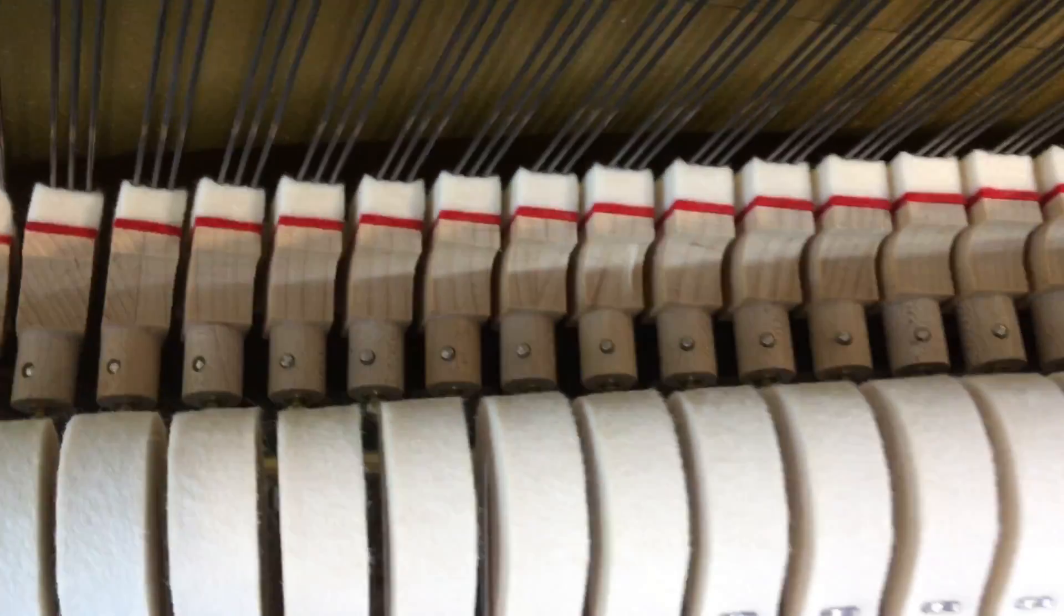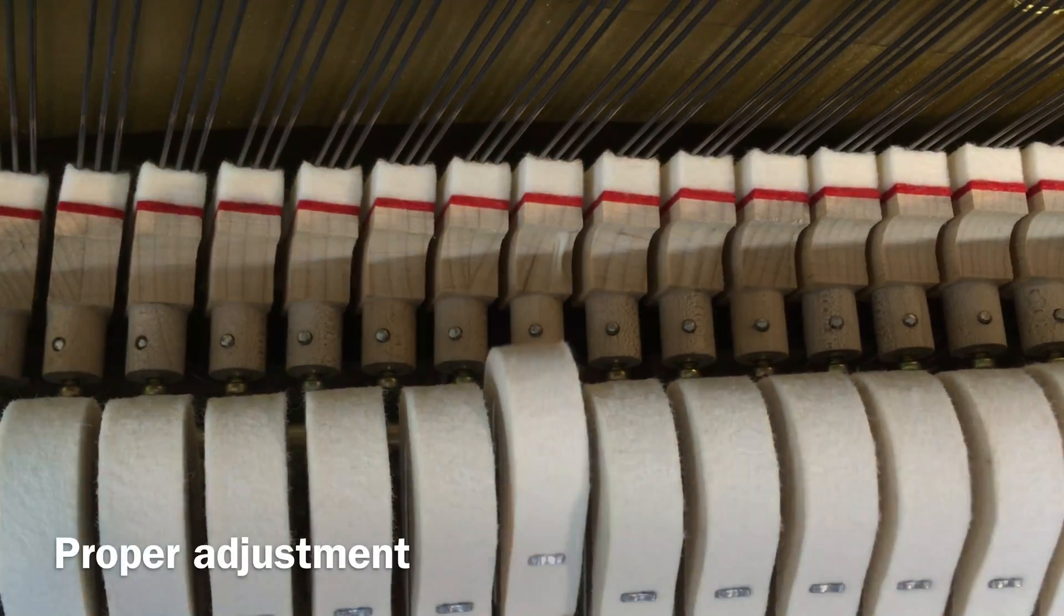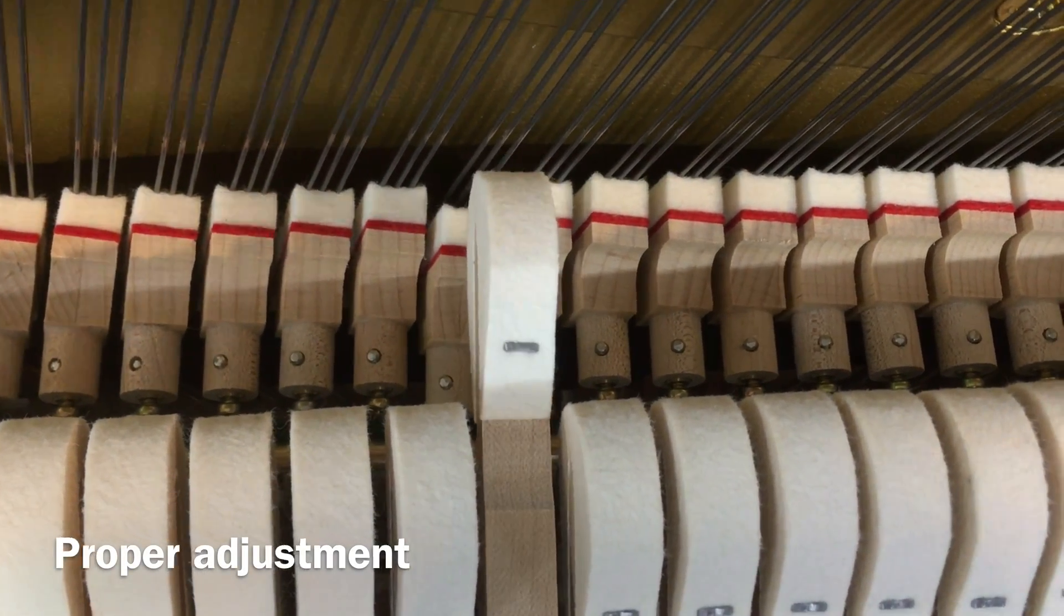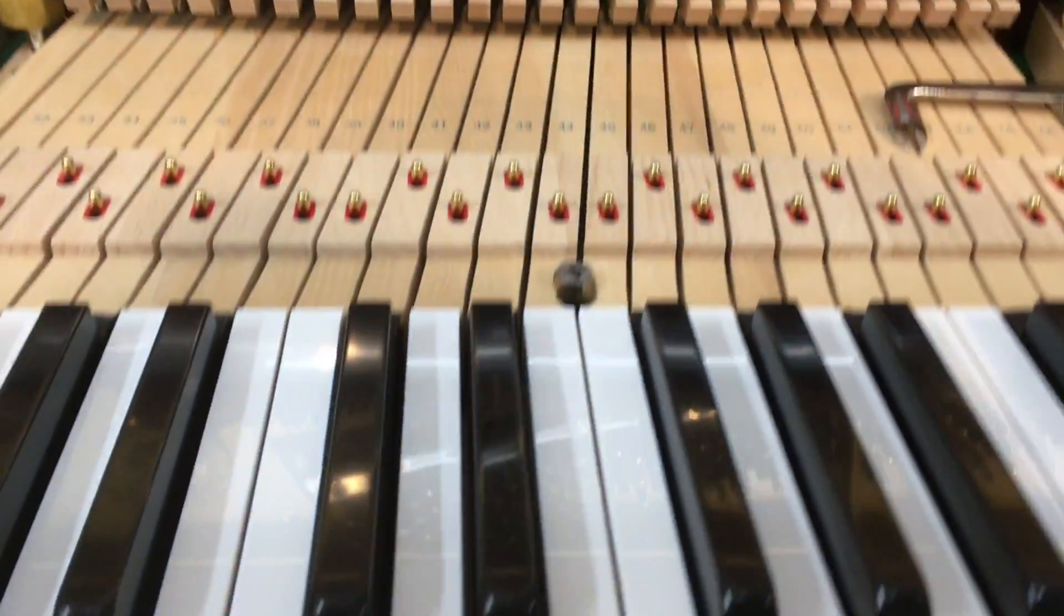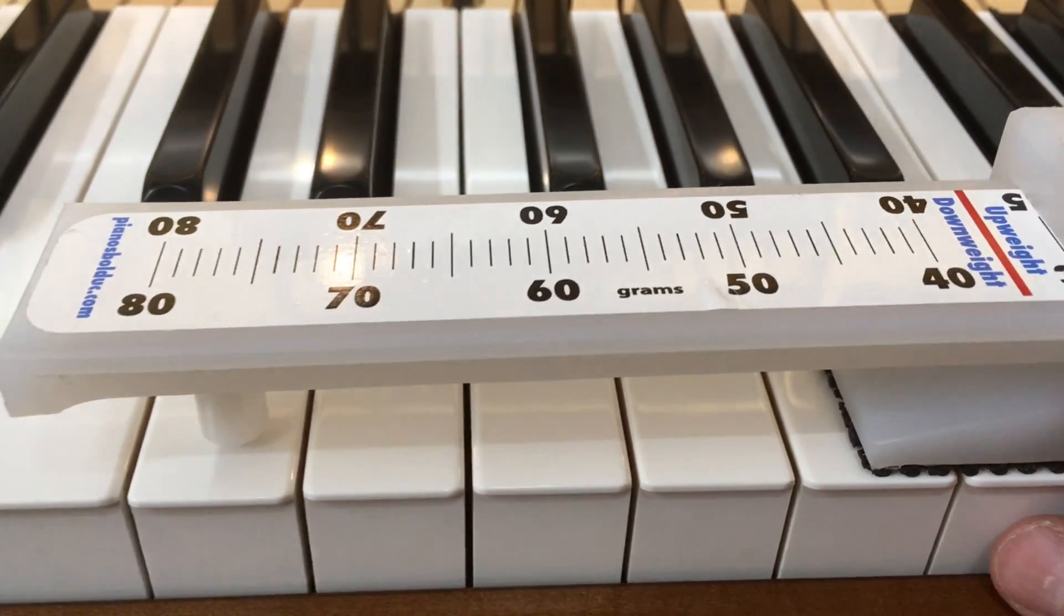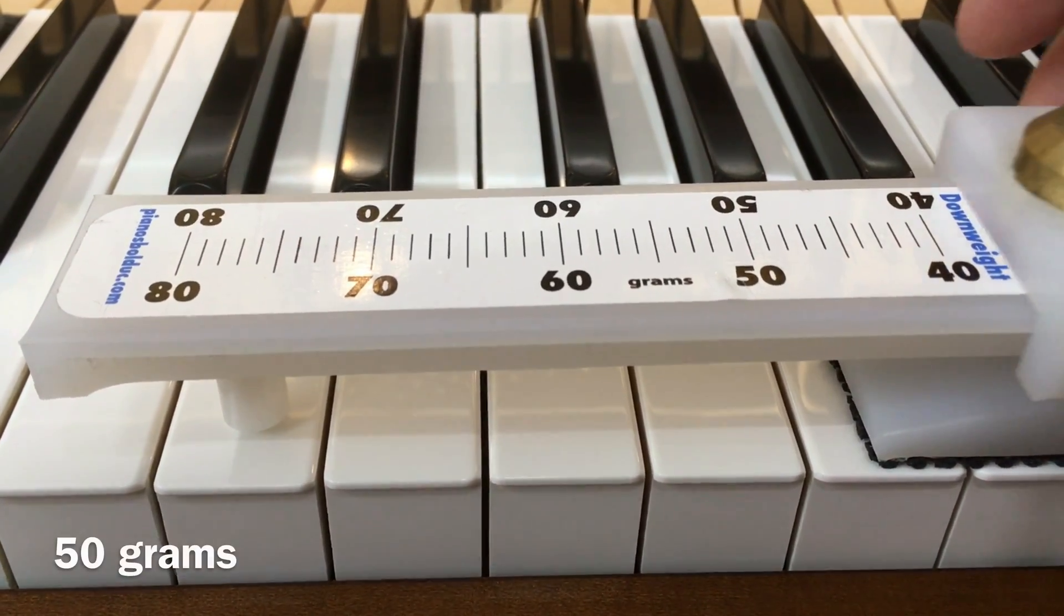The properly adjusted spoon on the neighboring D key causes the damper to lift off the string when the hammer has traveled half the distance to the string. The downward force required to cause this key to begin to drop is much more comfortable at about 50 grams.